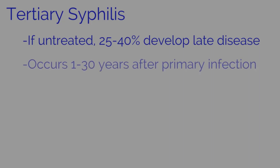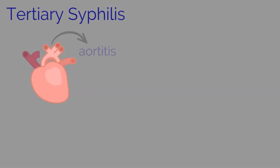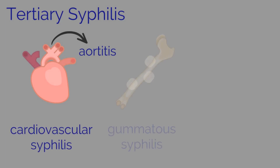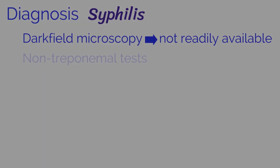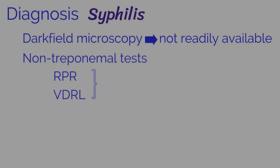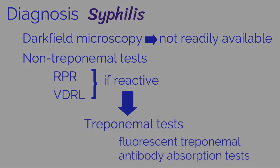Tertiary syphilis can occur anytime from 1 to 30 years after primary infection. Tertiary syphilis can infect many organs, including aortitis and cardiovascular syphilis, gummatous syphilis — which are granulomatous nodular lesions that can occur in the skin, bones, and internal organs — and CNS involvement, also known as neurosyphilis. Methods that detect the organism directly from a lesion, such as dark field microscopy, are not readily available. Diagnosis is typically with serology, including non-treponemal tests such as RPR and VDRL. If these tests are reactive, confirmatory testing with treponemal tests such as fluorescent treponemal antibody absorption tests are performed. She agrees to RPR screening.